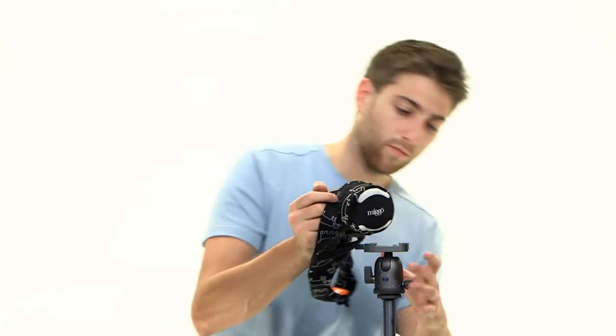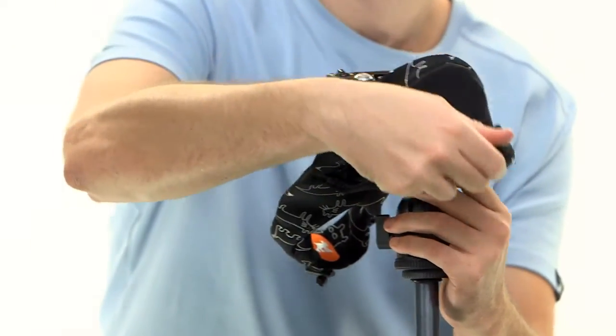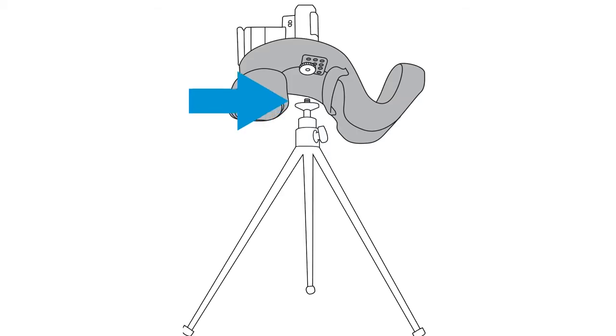Grip and wrap lets you connect your camera to a tripod without dismantling Mego. Simply thread the tripod onto the bottom part of the multi-purpose screw.